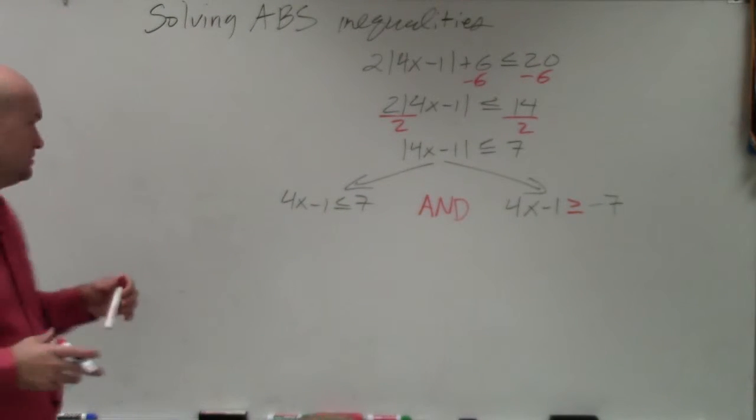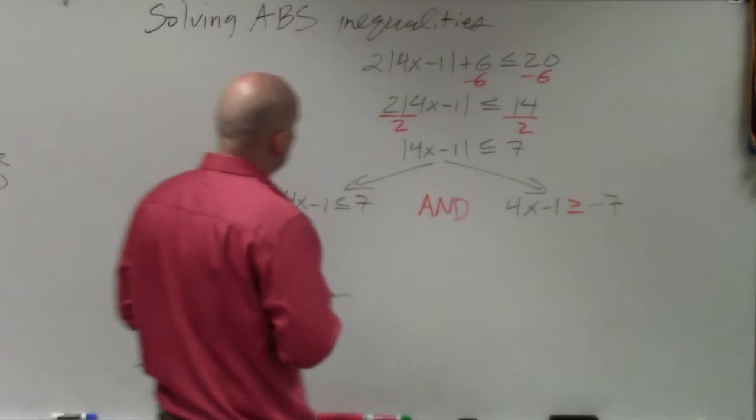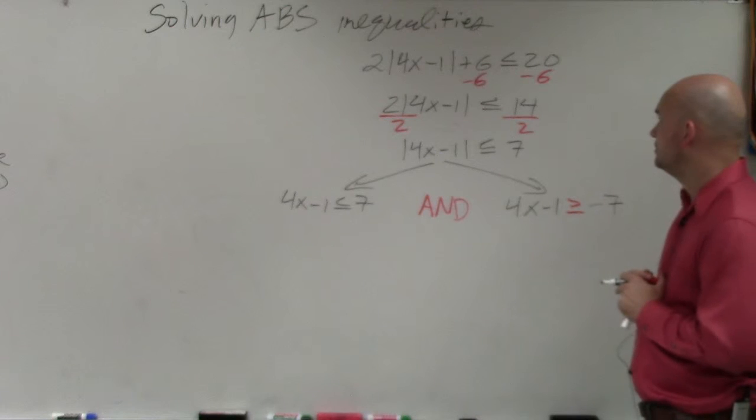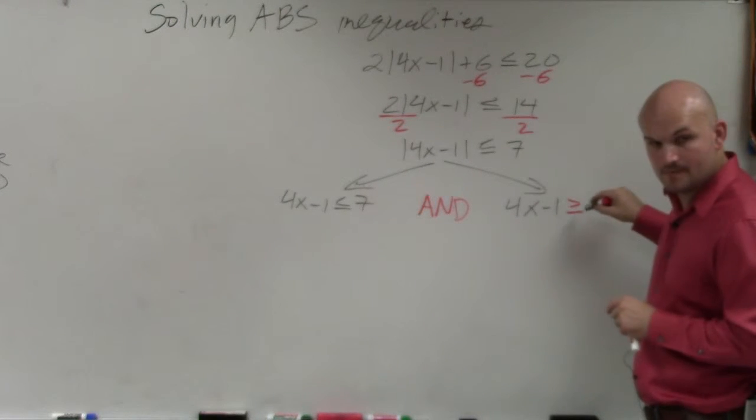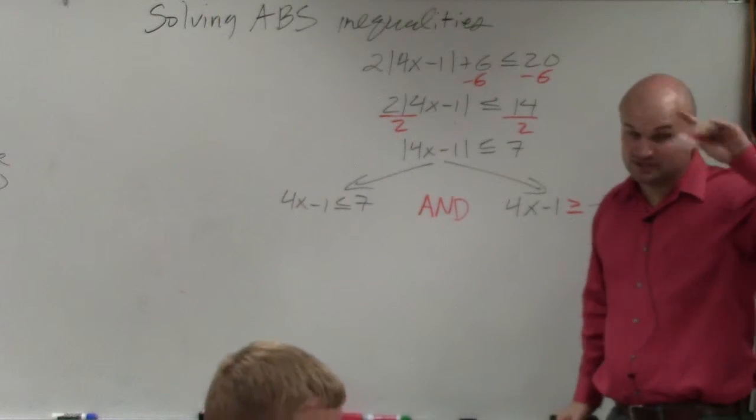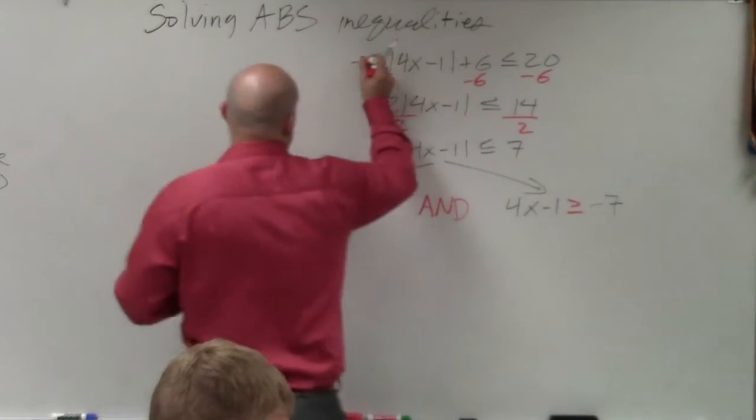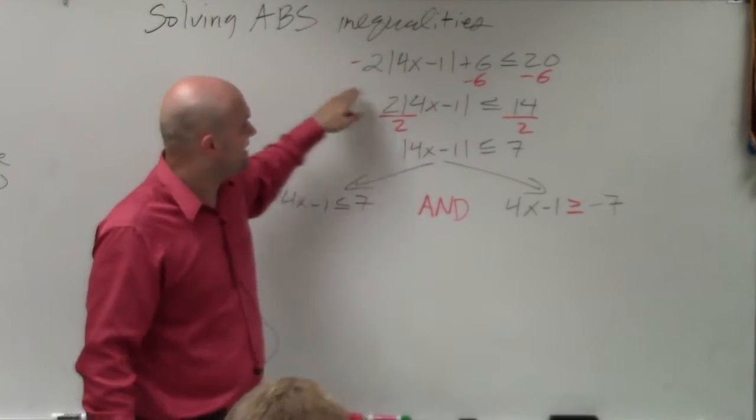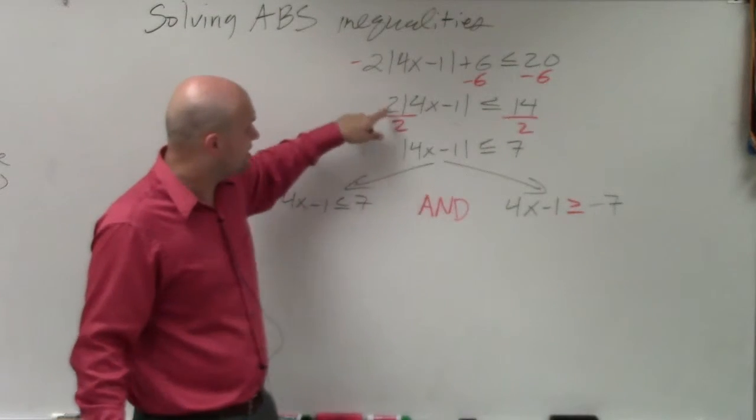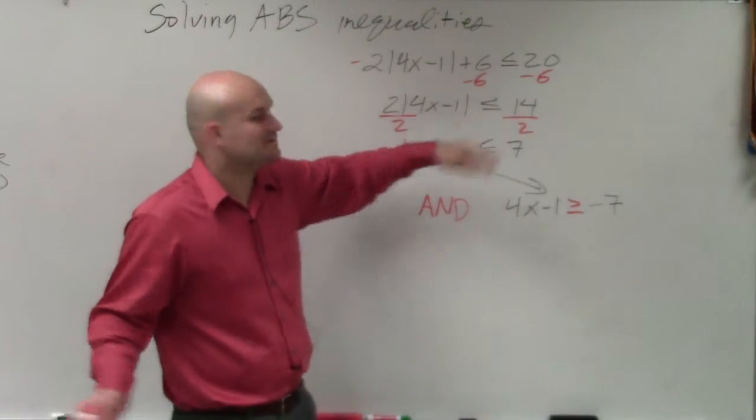For number 1, it says, but it is divided by a negative number. Oh, you mean like over here? Remember in the first example, this was a negative 2, right? So I had to divide by a negative 2 on both sides, right? That's why I flipped the sign up here. Over here, I'm just dividing by a positive 2, so I don't have to flip the sign.